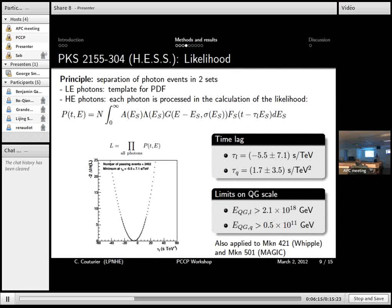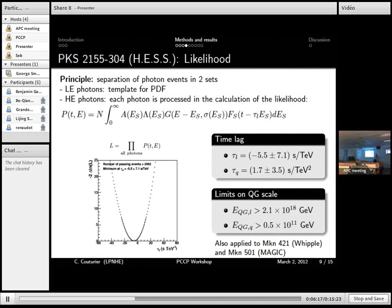I'll explain a bit more about the third method that is used for this object. It uses a likelihood fit. So again, we separate the photons into two sets. With the low energy photons, we'll make a template of the probability density function. And then with the other set, the high energy photons, we will take each photon and process it individually. So we'll see the probability that this photon has been shifted by a factor, by this lag, depending linearly of the energy.